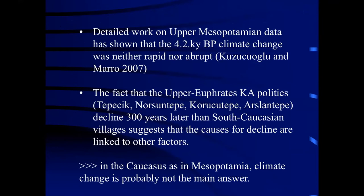But as you're probably aware, detailed work on Mesopotamian data has shown that the 4.2 ka BP climate event, as it's called — the one supposedly responsible for the collapse of Upper Mesopotamian societies at the very end of the third millennium — was neither rapid nor abrupt. And the fact that Upper Euphrates Kura-Araxes polities such as Tepejik, Norshuntepe, Kurucutepe, or Arslantepe declined 300 years later than the South Caucasian villages suggests that the causes for decline are probably linked to other factors. So in the Caucasus as in Mesopotamia, climate change is probably not the main answer.